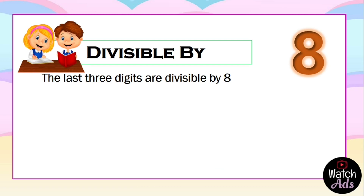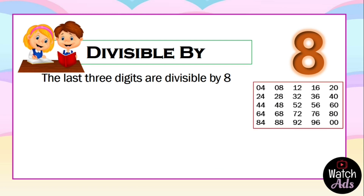For our next example, we will need our table of four — the multiples of four — as a side note. Our example is 1794. The last three digits are 794. We check if it is odd or even: it is even, so we can proceed with the tests.